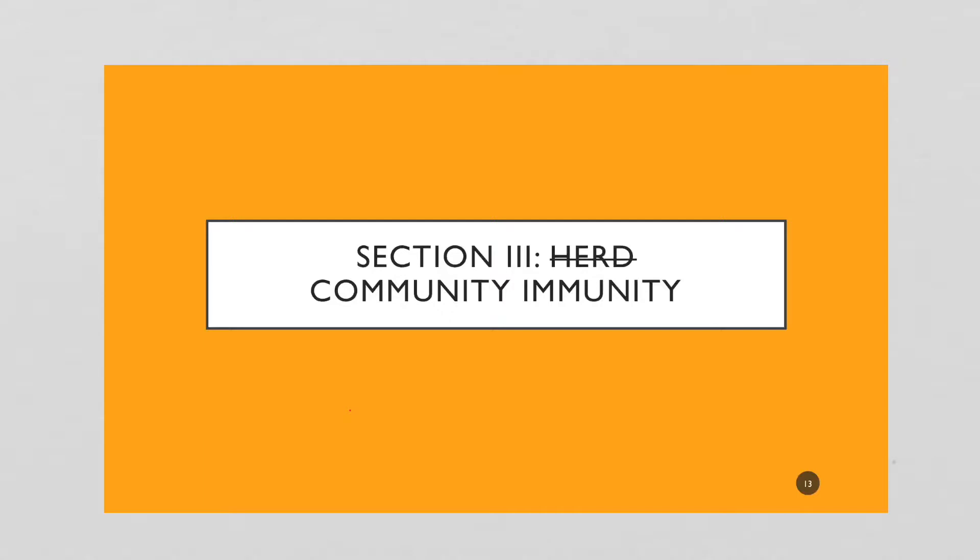Today we're going to talk about herd immunity. Correction, community immunity. We're using community immunity more now because we're really talking about people and not herds. Herd is an antiquated term. Well, not too antiquated - scientists still use it, but it's from the 1920s when this effect was seen in mice. I'll explain the effect here in a bit.